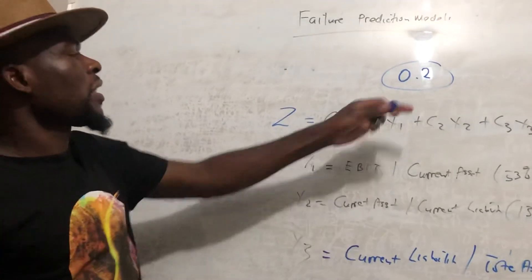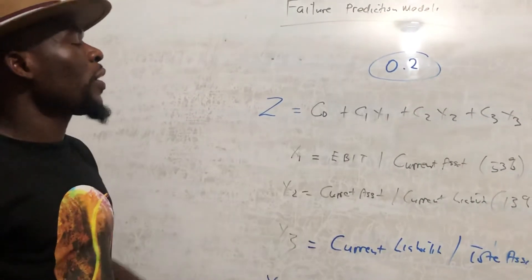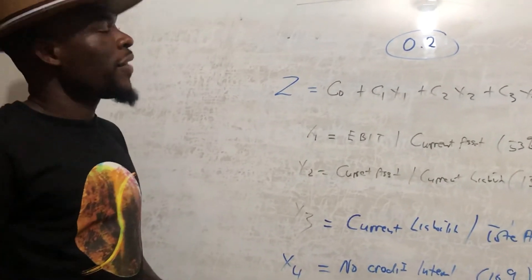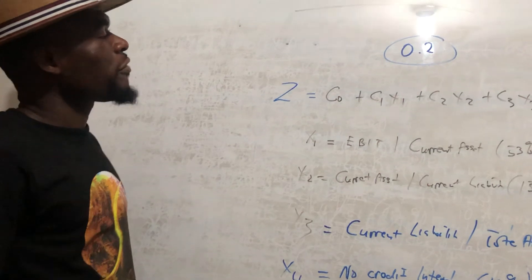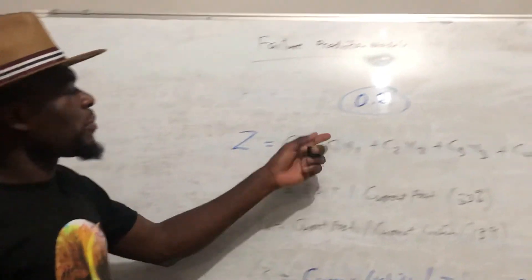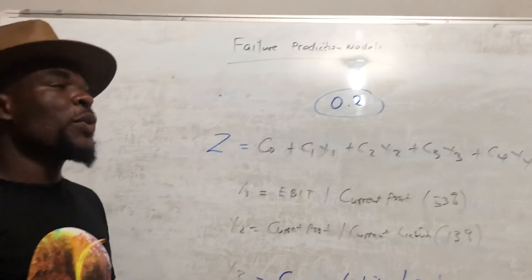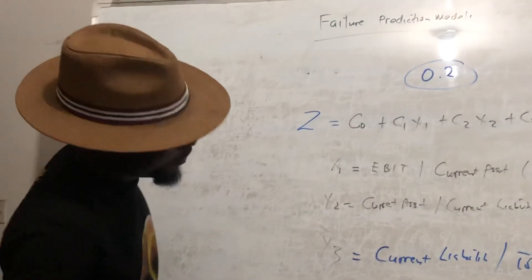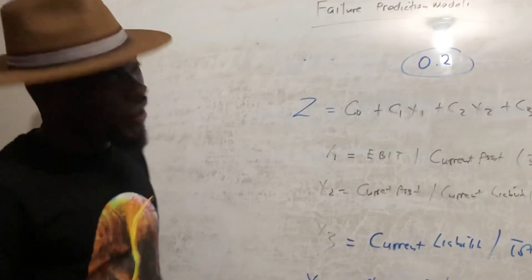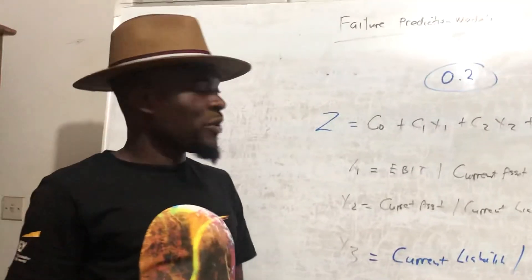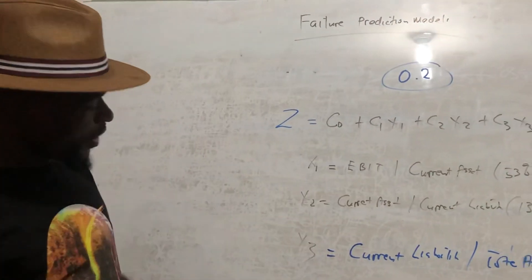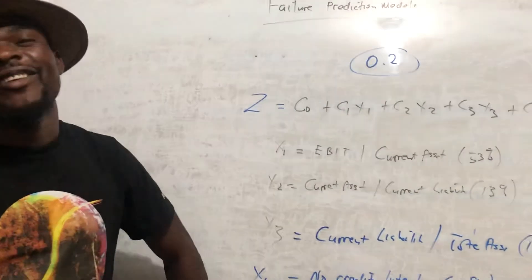For the Tafler Z-score interpretation: if your score is less than 0.2, the company is likely to fail; if it is more than 0.2, the company is not likely to fail. Thank you very much for viewing this video — please don't forget to subscribe.